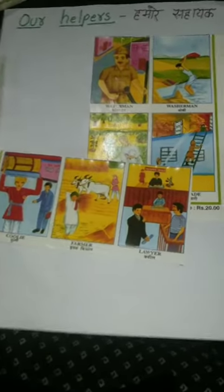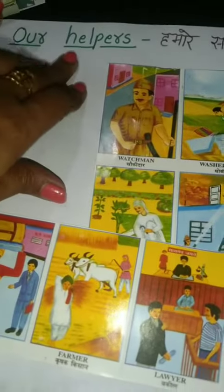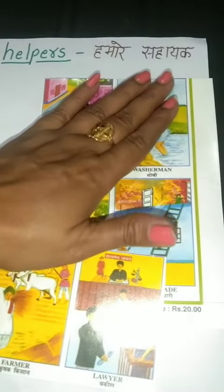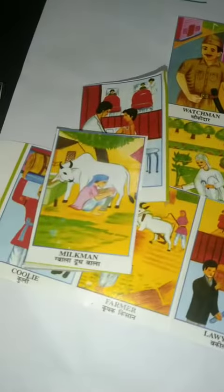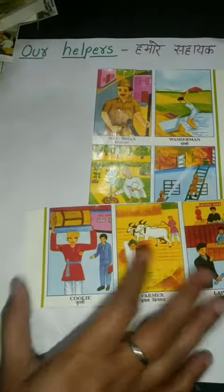Hello everyone, welcome to my class. Today I am going to tell you about our helpers. Kia hai, what is this? Our helpers, humare sahayat. Humare sahayat korn hotte hai? Jaise doctor, milkman, teacher, policeman, sweeper — jo hamari help karte hain, kuch aise kaam karte hain jisse hamari help hoti hai.